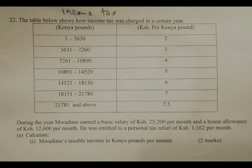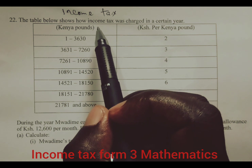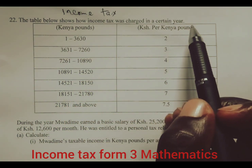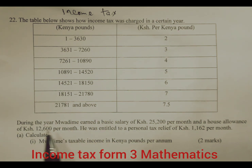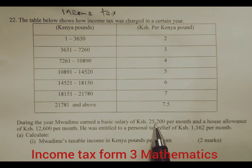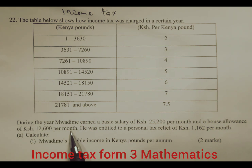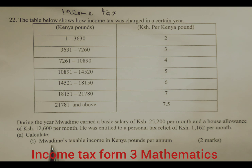Hello guys, welcome back to the discussion. We are presenting a question on income tax — Form 3 Mathematics. The table below shows how income tax was charged in a certain year. The information relating to this individual: Madime had a basic salary of Kenya shillings twenty-five thousand two hundred per month and a house allowance of Kenya shillings twelve thousand six hundred per month. On top of that, he was entitled to a tax relief of Kenya shillings one thousand one hundred and sixty-two per month. Part (a): calculate Madime's taxable income in Kenyan pounds per annum.